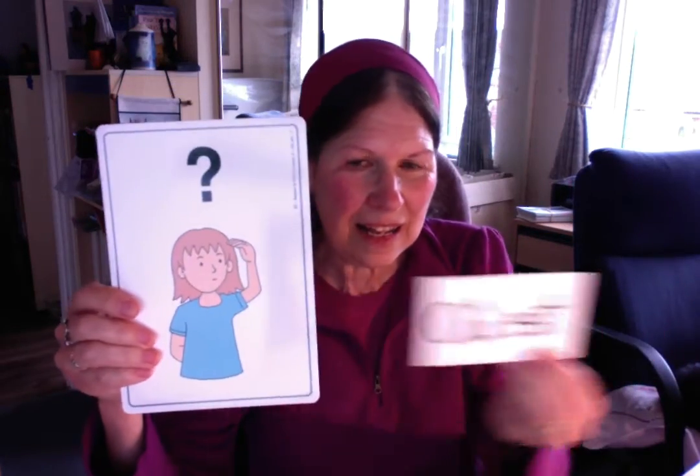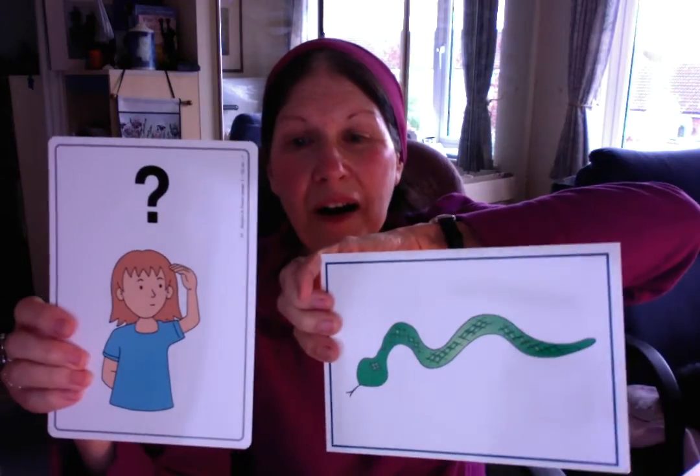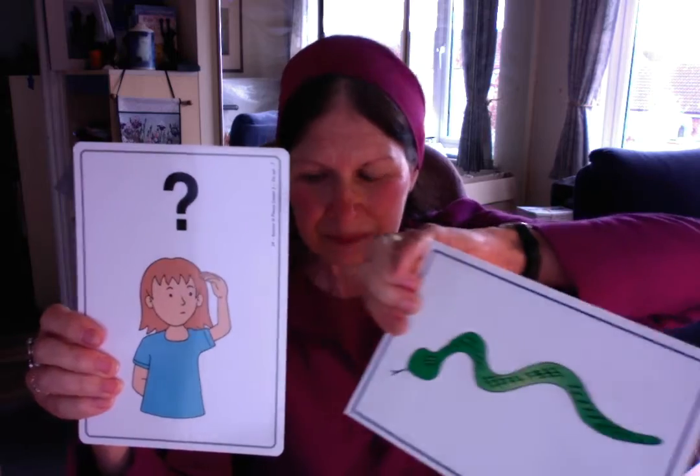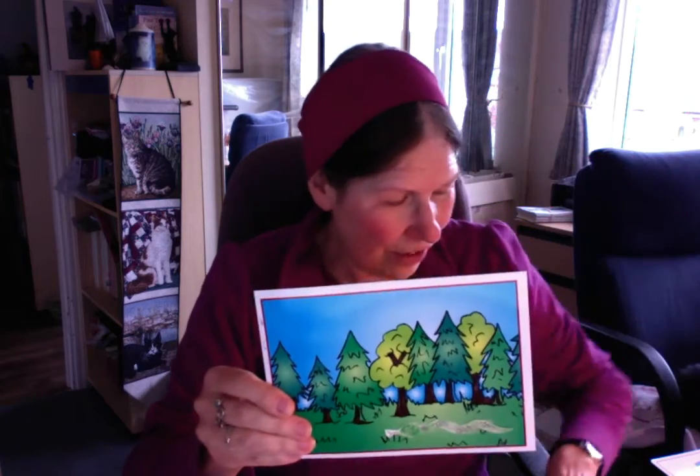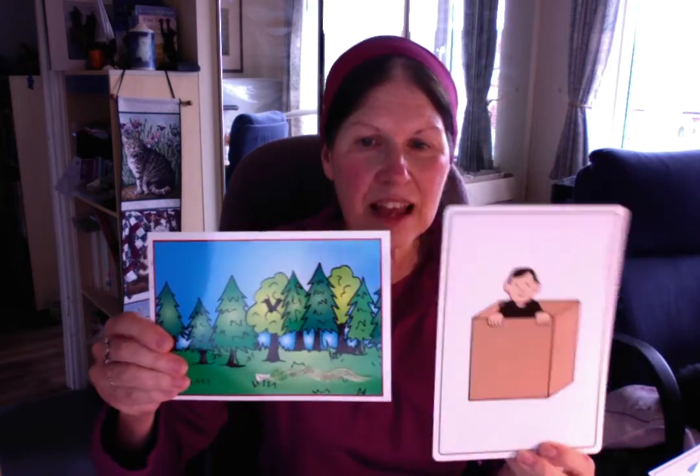Let's do another one. Où est mon serpent? Je ne sais pas. J'ai perdu mon serpent. J'ai trouvé ton serpent. Alors, serpent was masculine. So we use: il est dans la forêt. Alors, il est inside the forest — dans la forêt.